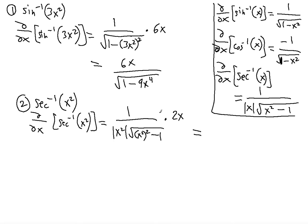Notice that the absolute value of x squared is just x squared, because no matter the value of x, as long as the absolute value of x is greater than 1, we're fine. This is a constraint for arc secant: if x equals 1 you get zero in the denominator, and if the absolute value of x is less than 1 you get a negative under the square root — both undefined. So the absolute value of x greater than 1 is a necessary constraint.